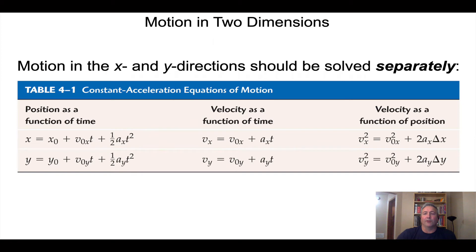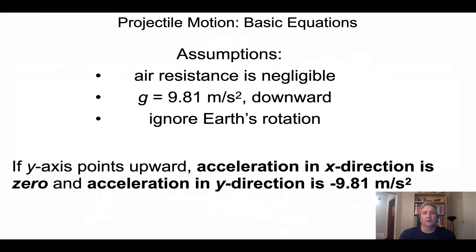Those are the base formulas for two-dimensional motion, but we're going to focus primarily on projectile motion, which is unique because it doesn't require all of those formulas. In projectile motion we make some key assumptions: we disregard the effect of air resistance, we treat the acceleration of gravity as a constant 9.81 meters per second squared downward at Earth's surface, and we ignore the Earth's rotation — though that could be a factor in real long-distance projectile motion.